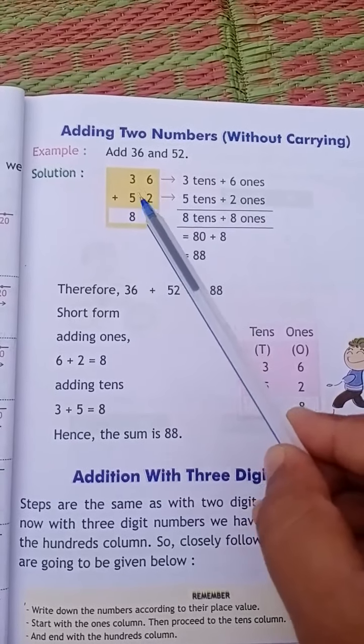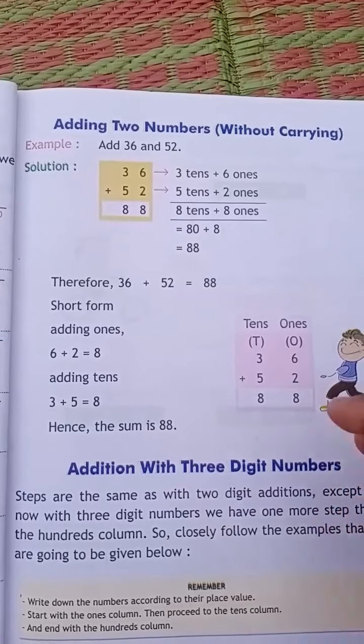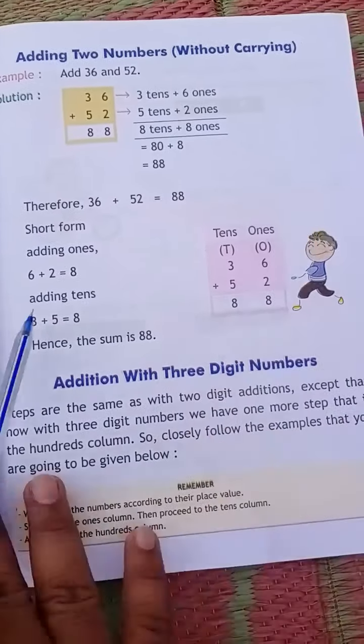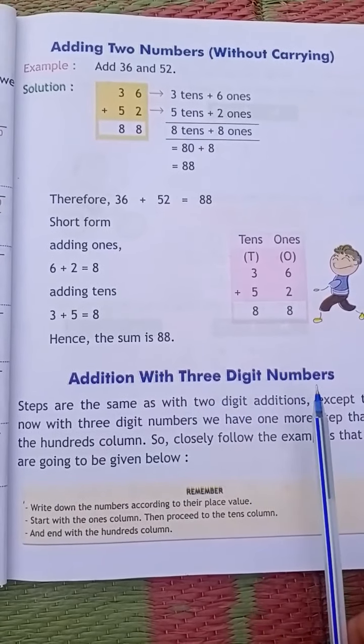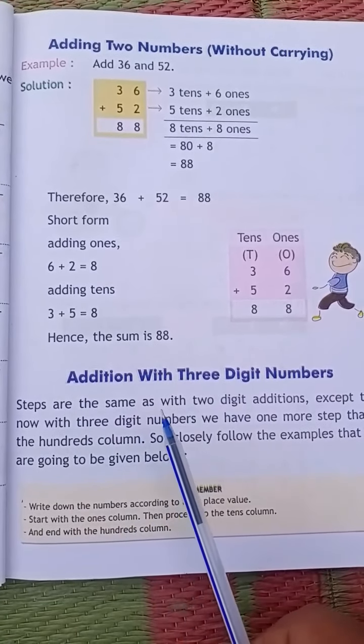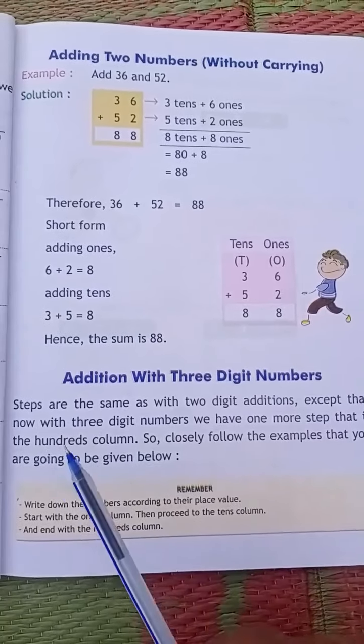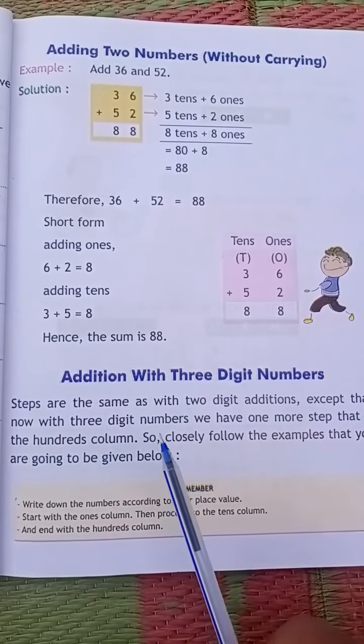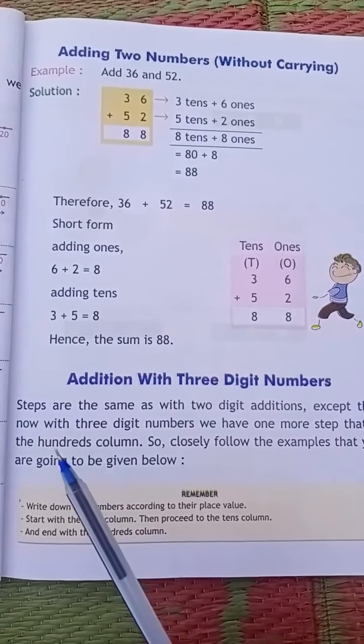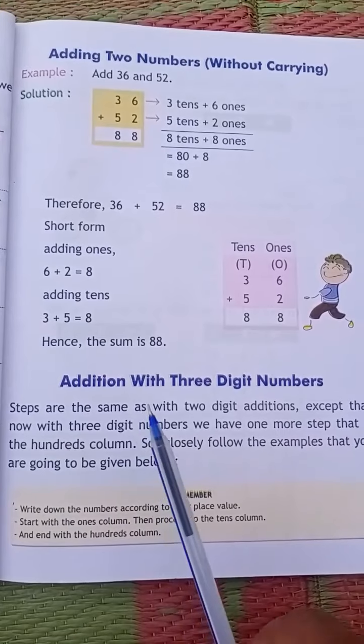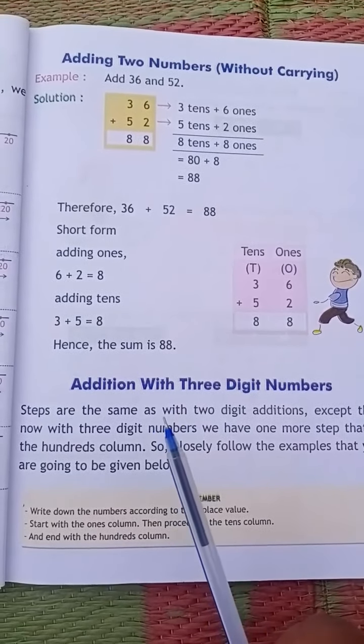Addition with three digit numbers. The steps are the same as with two digit addition, except that now with three digit numbers we have one more step, that is the hundreds column.